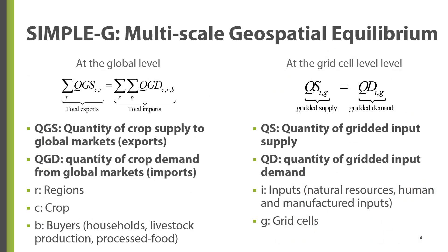The equations on this slide are a general representation of market equilibrium, and show that the total quantity of commodity demanded should be equal to the quantity of commodities supplied at each market scale. These conditions are ensured through adjustment in the prices faced by buyers and sellers. The next chapter will introduce specific functional forms of supply and demand for various markets.